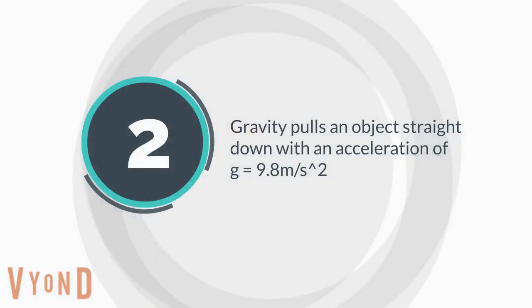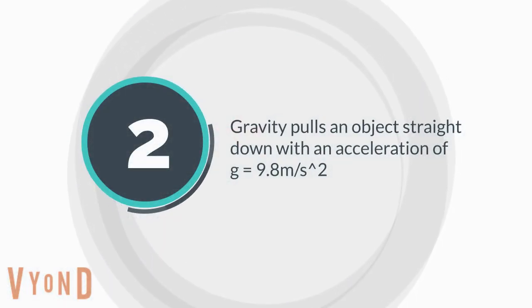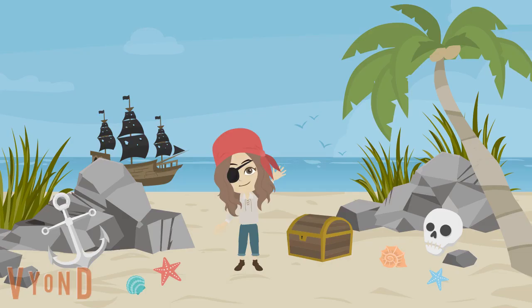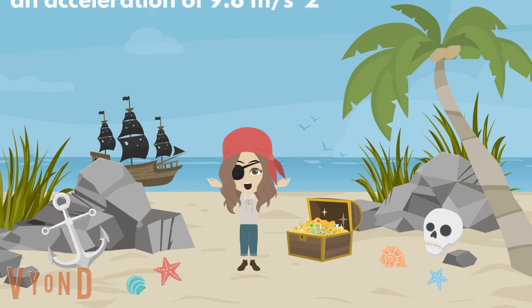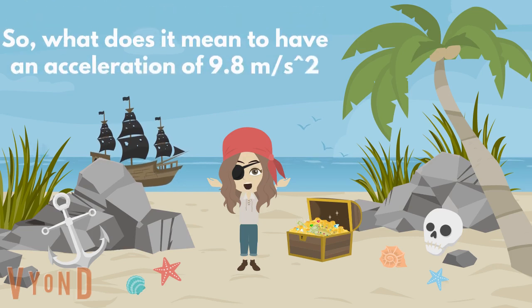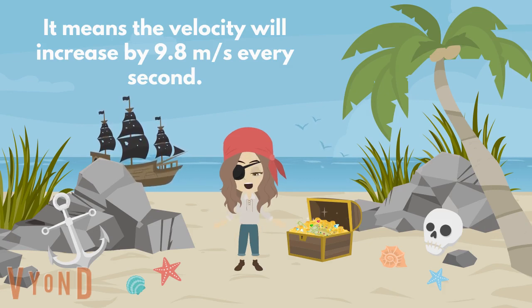Number 2: gravity pulls an object straight down with an acceleration of g equals 9.8 meters per second squared. Hi, my name is Karen. What does it mean to have an acceleration of 9.8 meters per second squared? It means the velocity will increase by 9.8 meters per second every second.